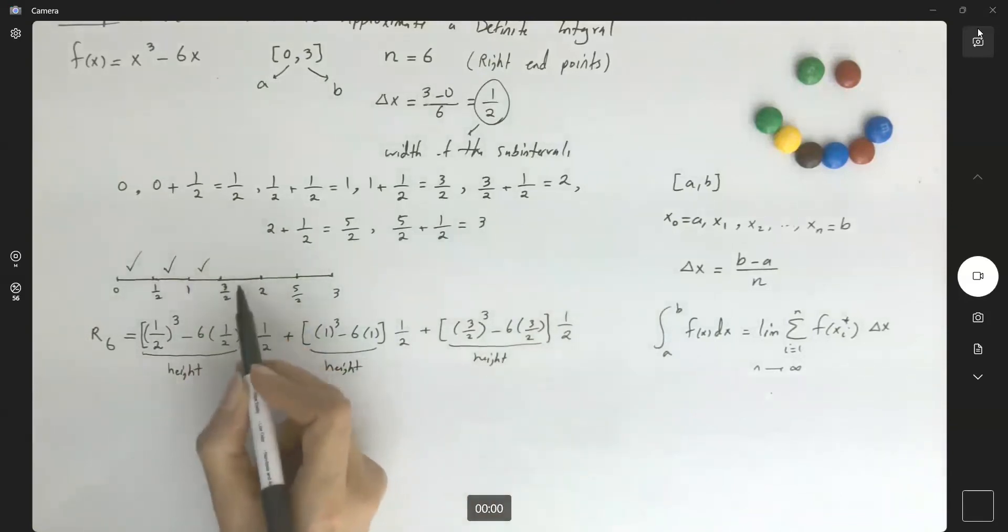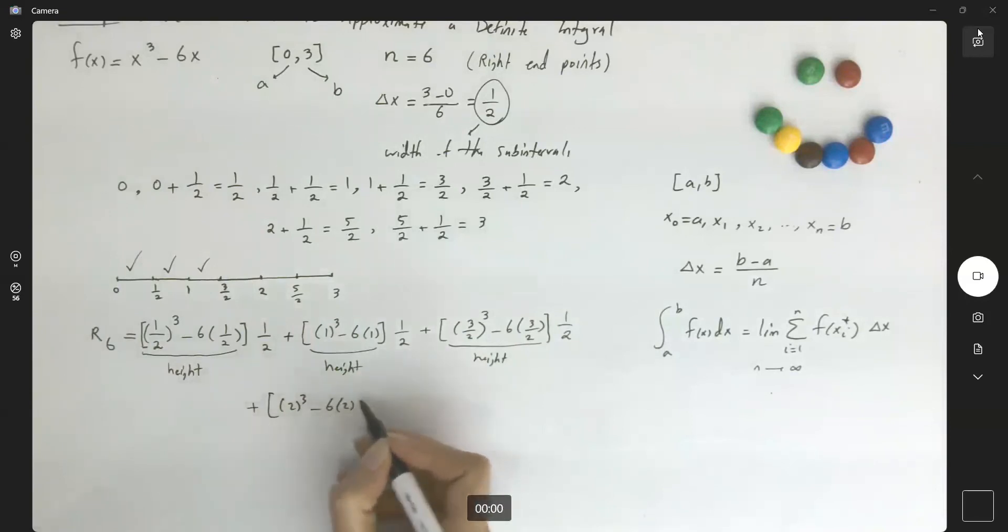So now we're moving to the fourth subinterval with the right endpoint, which is 2. Now you're going to enter 2 into the function. 2 to the third minus 6 times 2 times the width, plus.